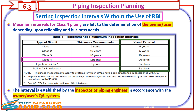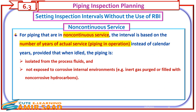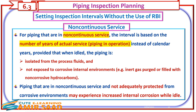For piping in non-continuous service, the interval is based on the number of years of actual service — piping in operation — instead of calendar years, provided that when idled, the piping is isolated from the process fluids and not exposed to corrosive internal environments, for example inert gas purged or filled with non-corrosive hydrocarbons. Piping in non-continuous service that is not adequately protected from corrosive environments may experience increased internal corrosion while idle.